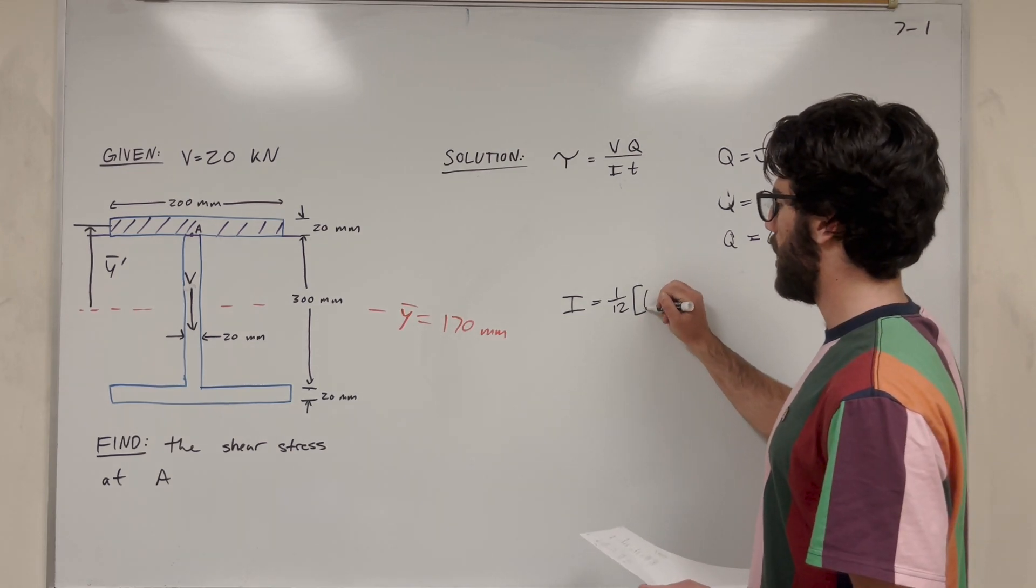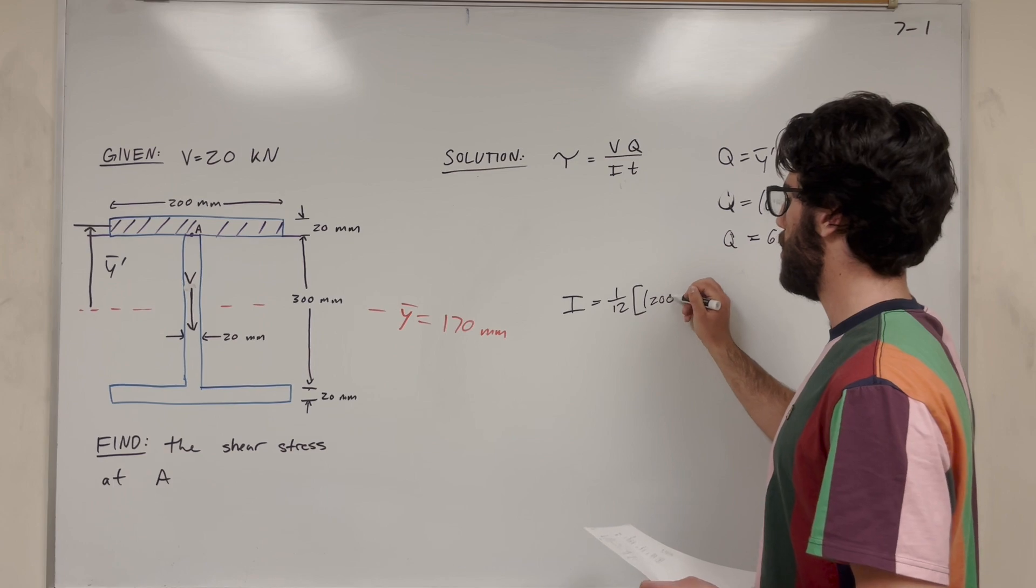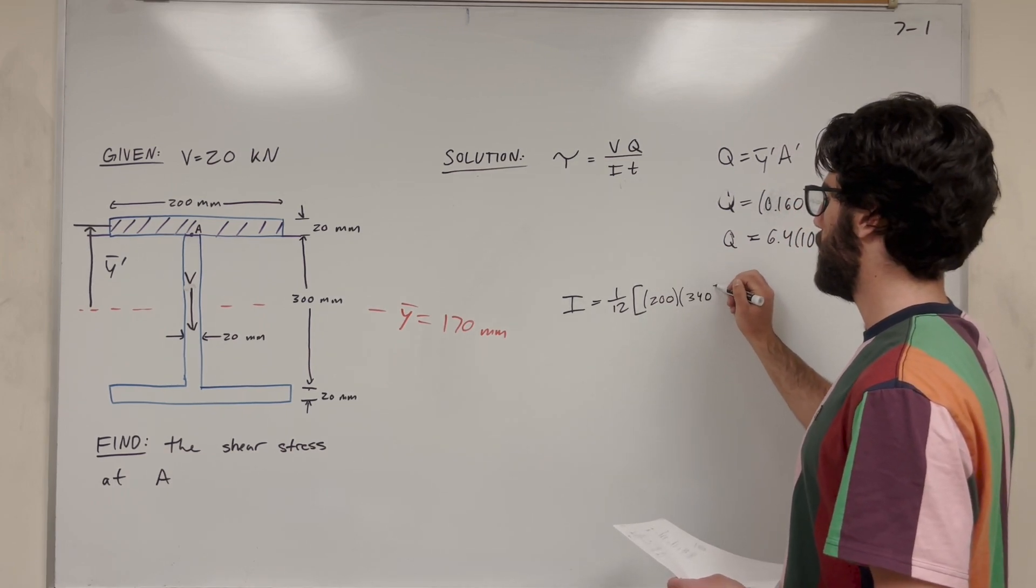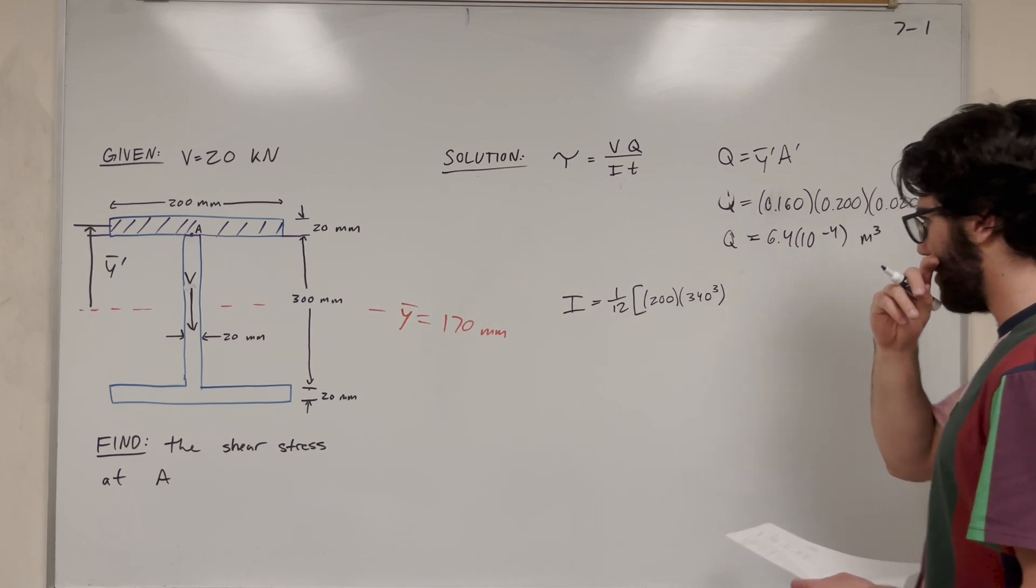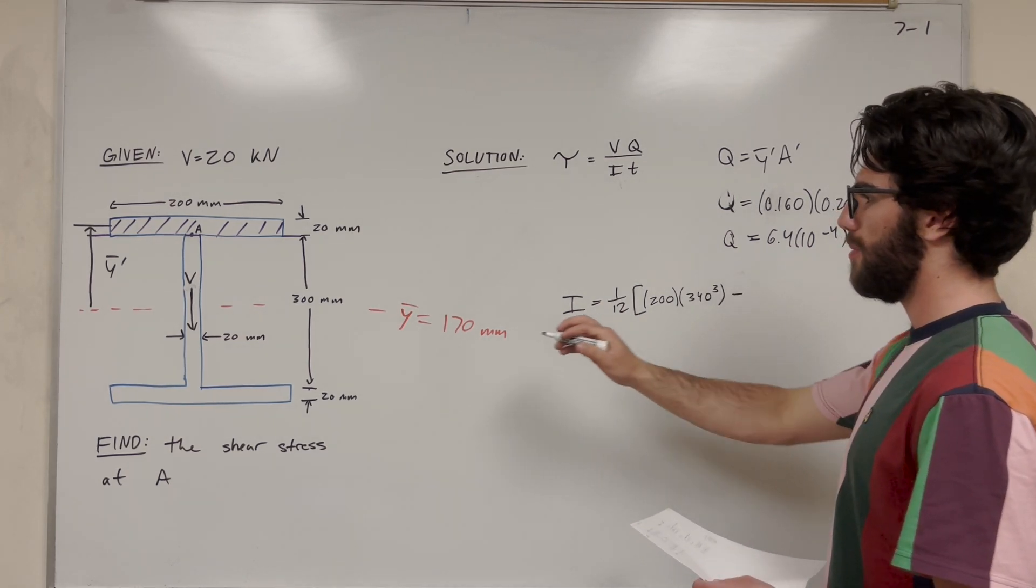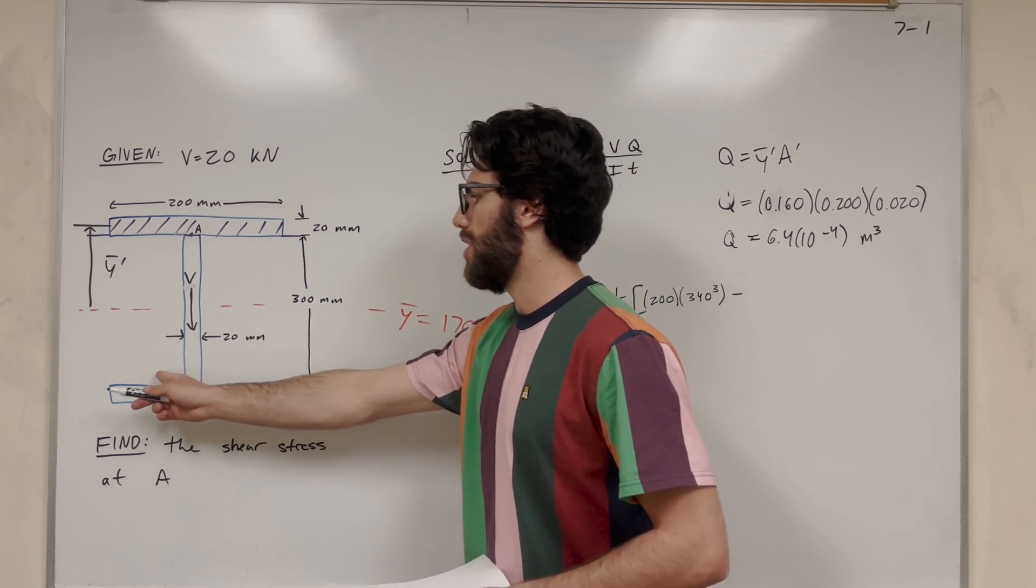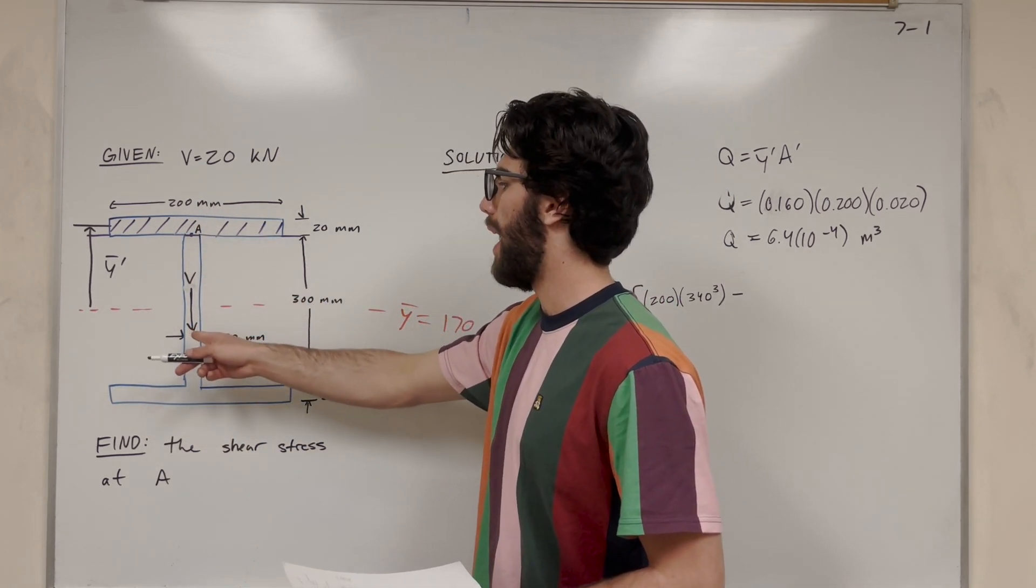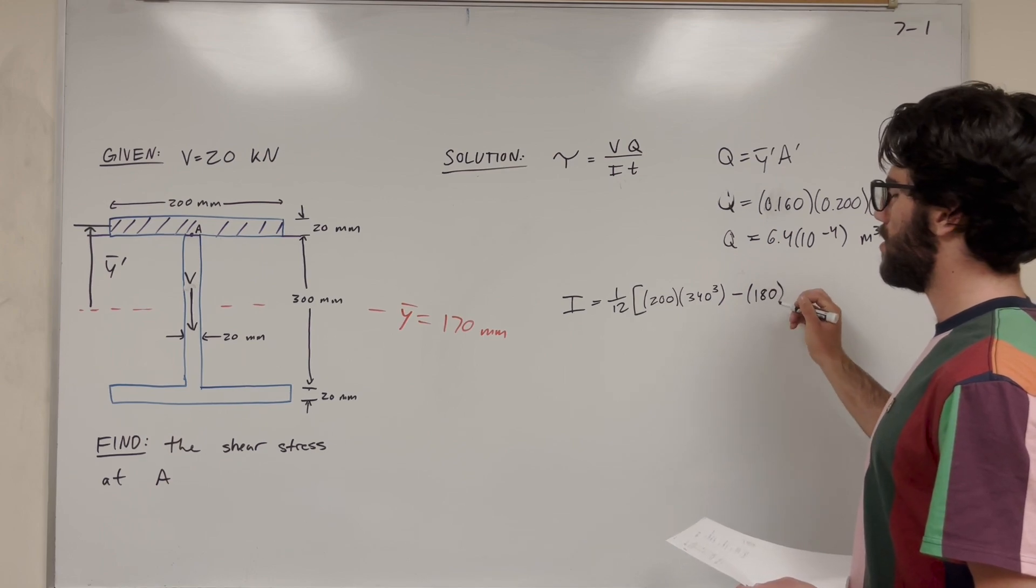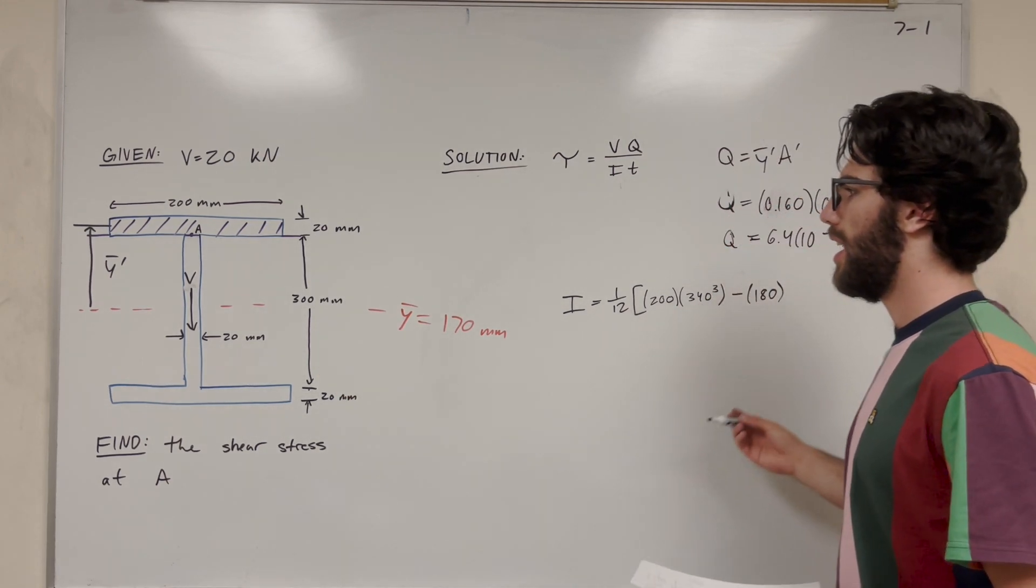So the big rectangle has a base of 200 millimeters and a height of 340 millimeters. We have to cube the height because for a rectangle moment of inertia we cube the height. Then we're going to subtract from those two. So the base of this rectangle here is going to be 200 minus 20, so we're going to subtract 180. And then the height is going to be 300.